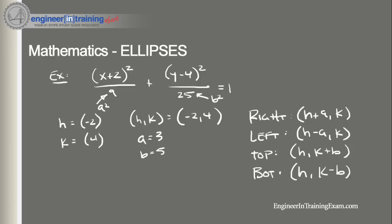So all we need to do is plug in our information. We find that h + a: h is -2, a is 3, we're going to have 1 and we know k is 4. So the right point is going to be (1, 4). We have h - a: h again is -2 and a is 3, so we got -2 minus 3, we're going to get (-5, 4).